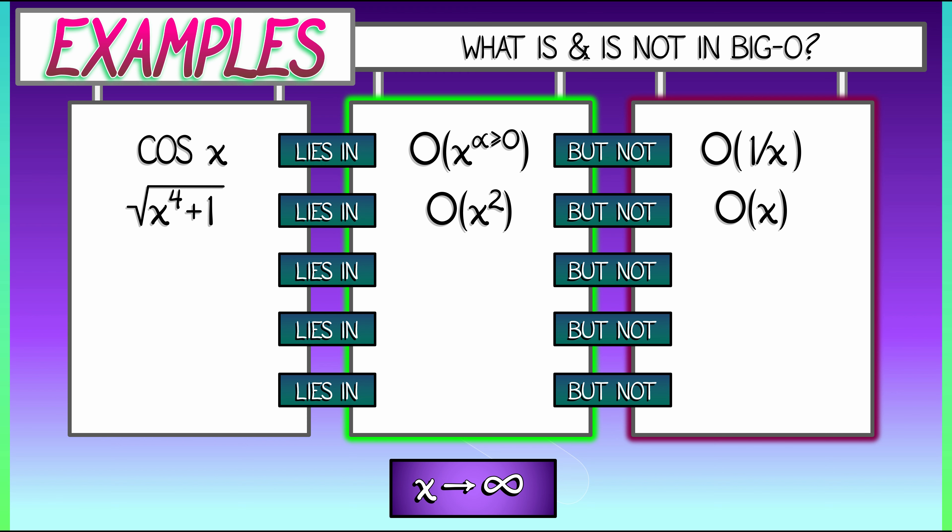Consider again the function 5x plus 3x squared. What kind of growth do we have now as x is going to infinity? It's the quadratic term that matters. This lies in big O of x squared, but not in big O of x. That's the opposite case to what happens when x goes to zero.